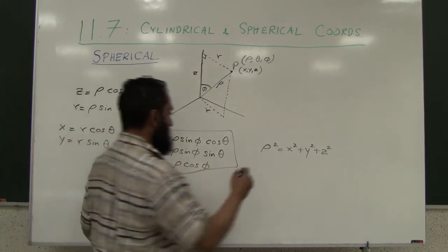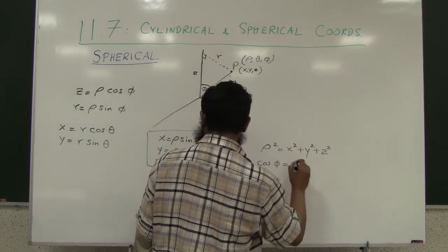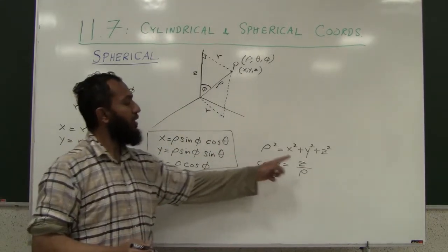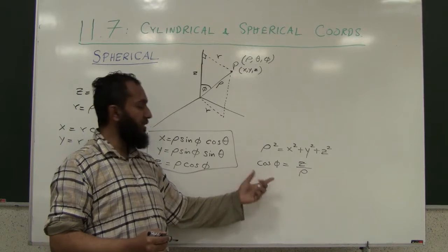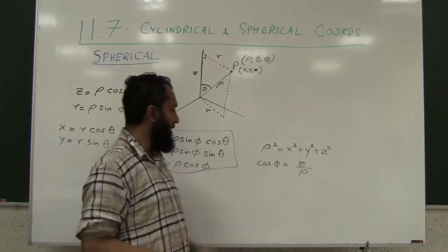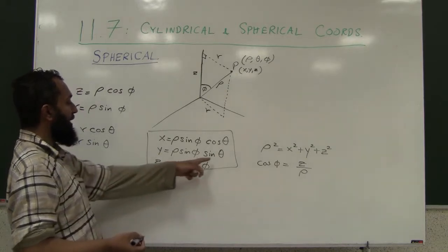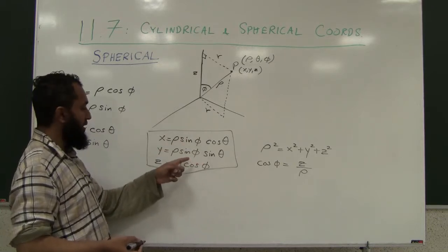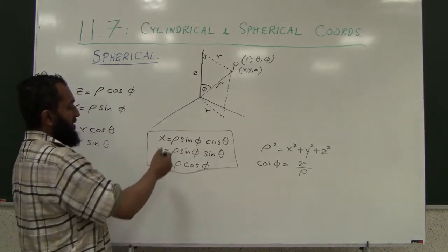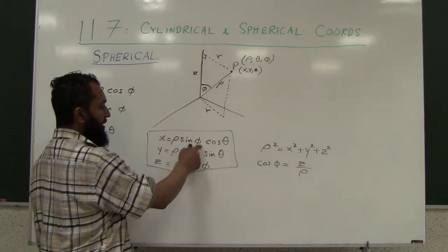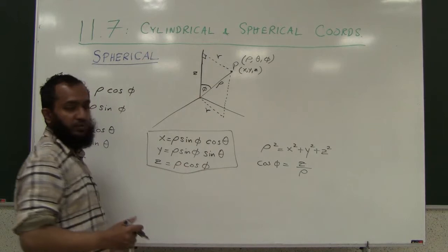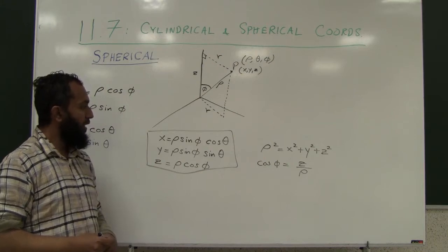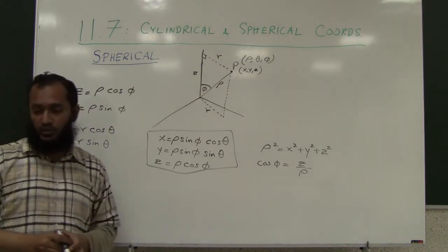To find phi, you use cosine phi equals Z over rho. Once you've computed rho, you compute Z over rho, then take the arc cosine to find phi itself. Finally, to find theta: once you've found phi, you know sine phi, and using either the X or Y equation, you can extract cosine theta or sine theta respectively to determine theta.